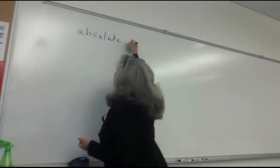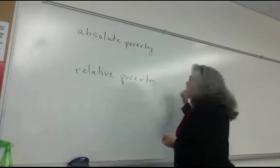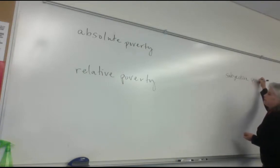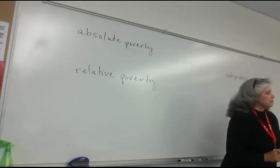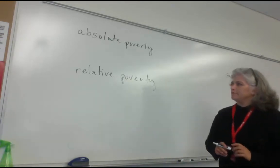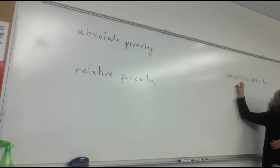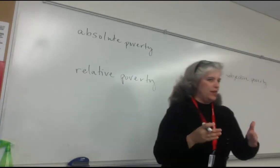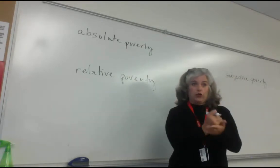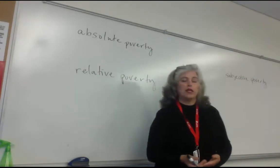One is called absolute poverty, one is called relative poverty, and the third is called subjective poverty. Absolute poverty and relative poverty have very specific objective definitions. Subjective poverty, as the name suggests, is going to be very subjective — it depends on who uses it and their point of view.